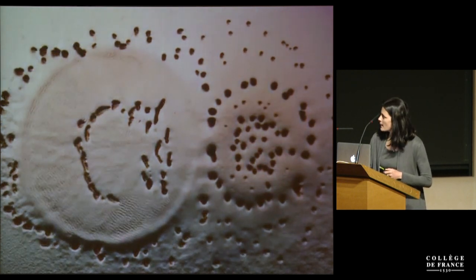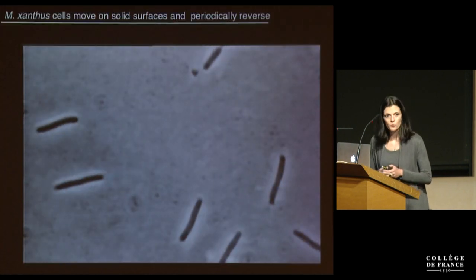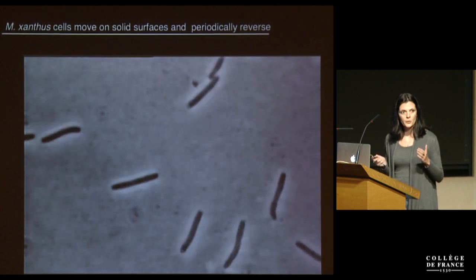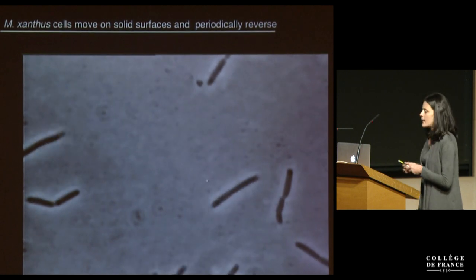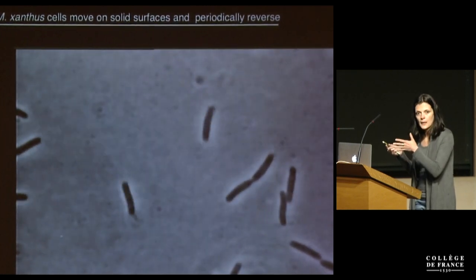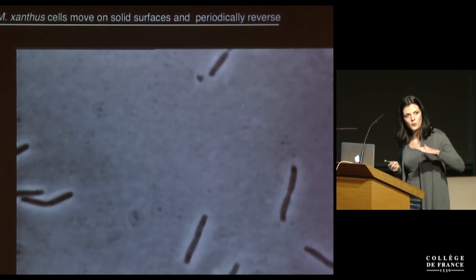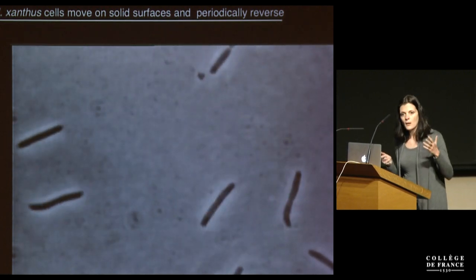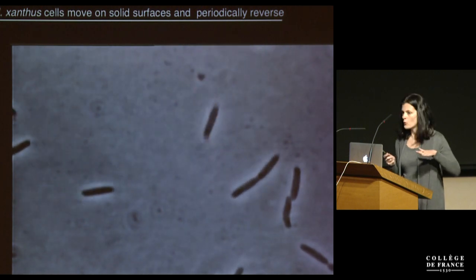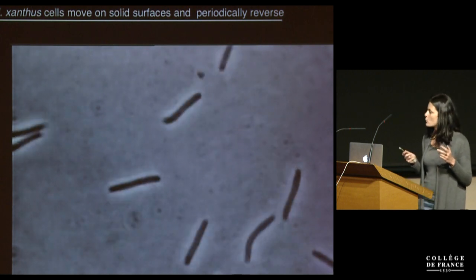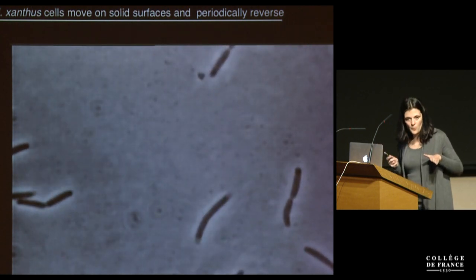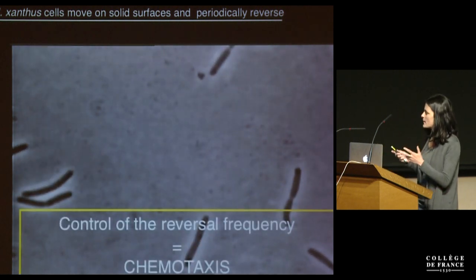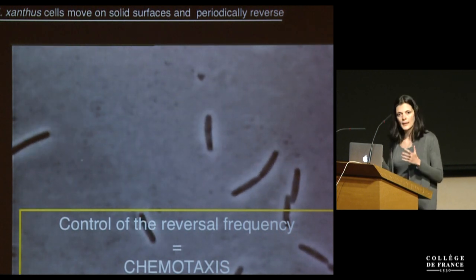In order to be able to do all this, bacteria have to do at least two things. They have to be able to move on solid surfaces, as we see here — single cells can move. But they also have to be able to reverse at a certain frequency the direction of their movement. They need to modulate their cellular direction: if they are going towards a favorable condition, they will just go straight or reverse very infrequently. But if they sense they are moving towards a toxic environment, they will start reversing very often until they randomly end up in the right direction. They will stop reversing and keep going, and this is exactly what is called chemotaxis behavior.